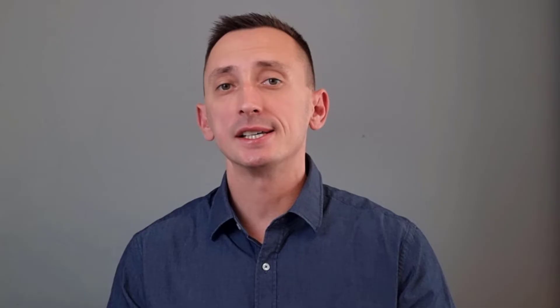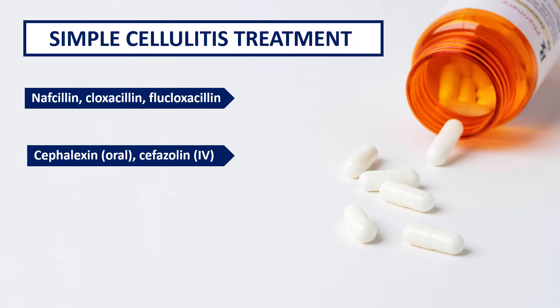Why does this matter? Well, if this is a skin infection but there is no ulcer and no necrosis, we can treat it like normal uncomplicated cellulitis. Which means we can use our regular antibiotics that cover only Staphylococcus aureus and Streptococci — we don't have to go broader. So we can use either antistaphylococcal penicillins, first generation cephalosporins, or clindamycin. All of these should get the job done really well.